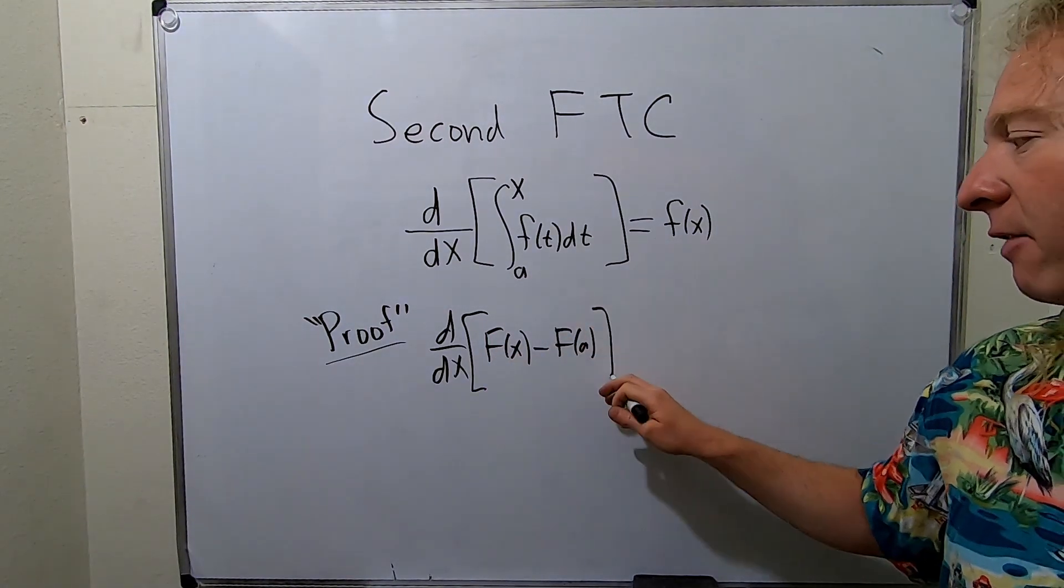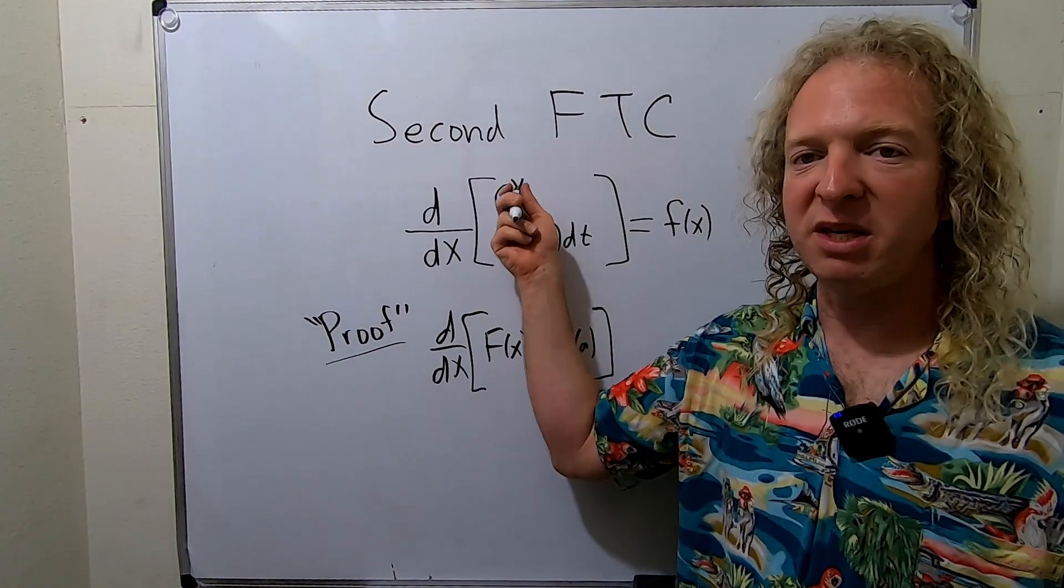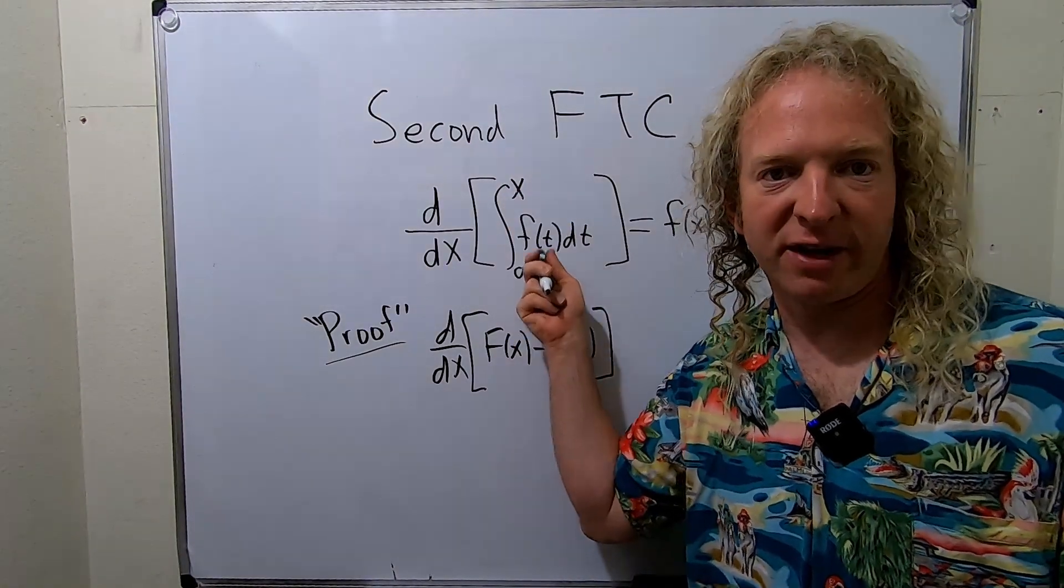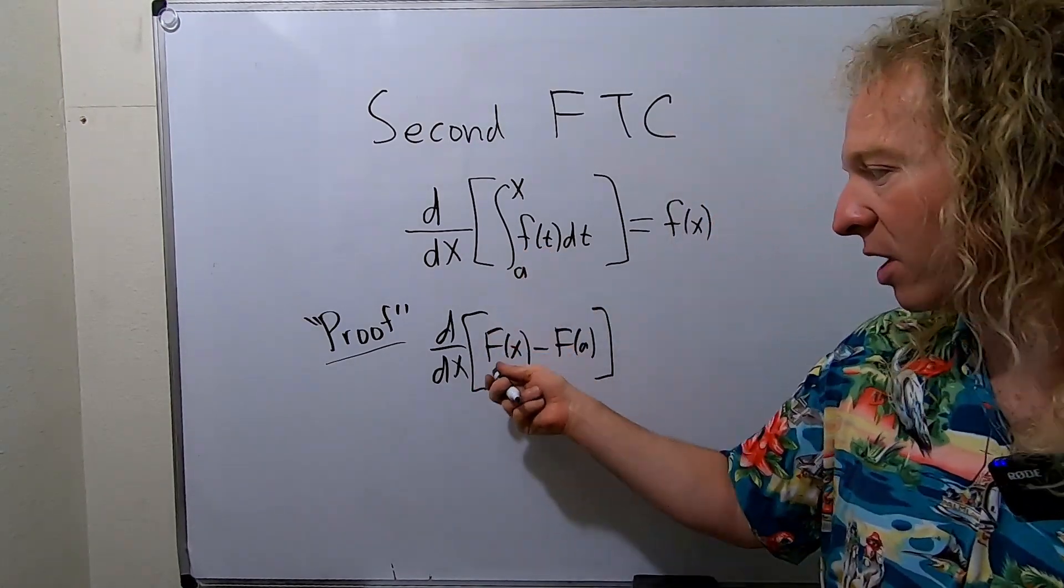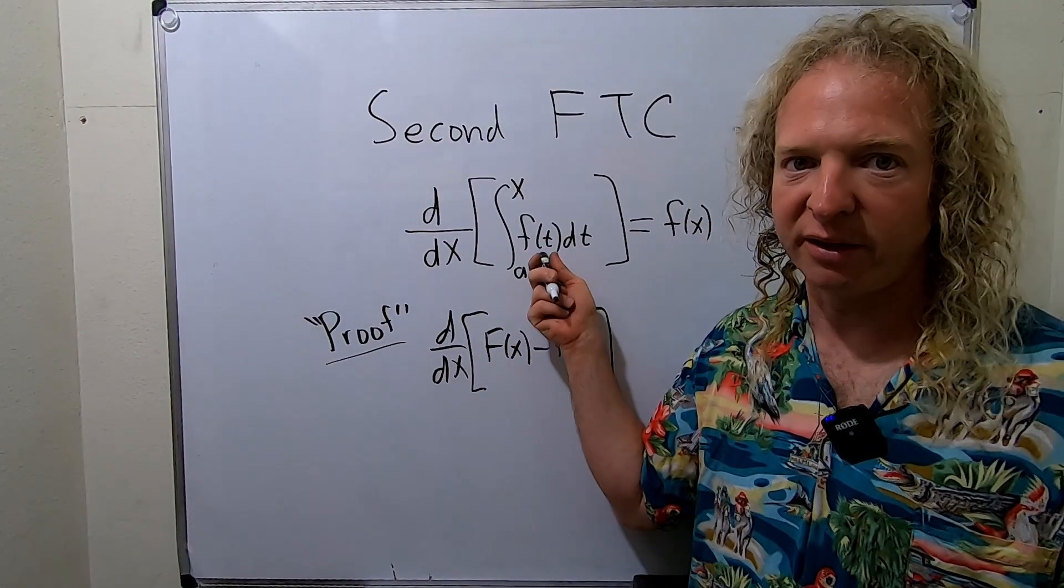If you remember this from before, it was big F of B minus big F of A, except this time it's x. Where big F is an antiderivative for little f. That means if you take the derivative of big F, you get little f.